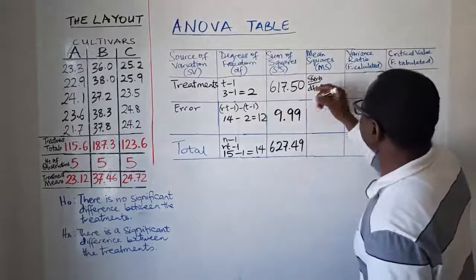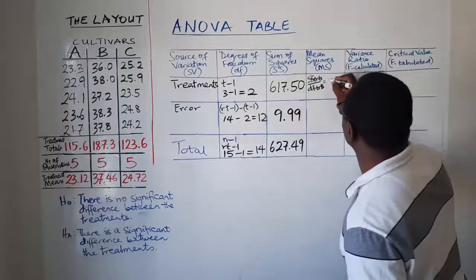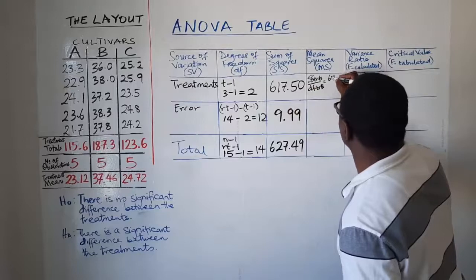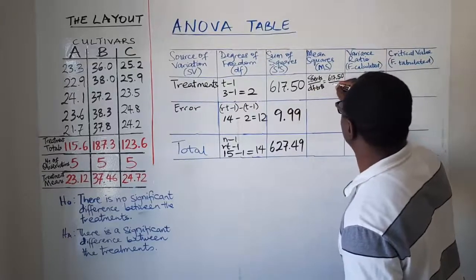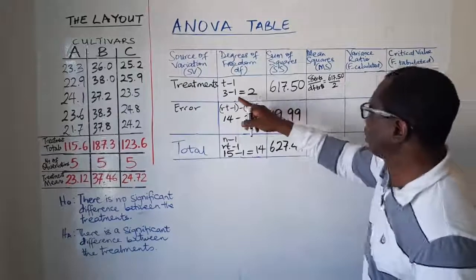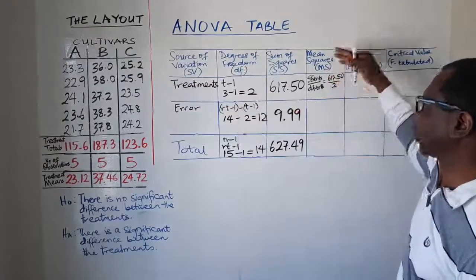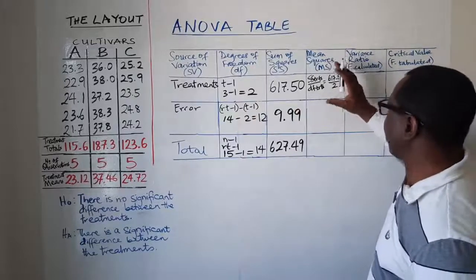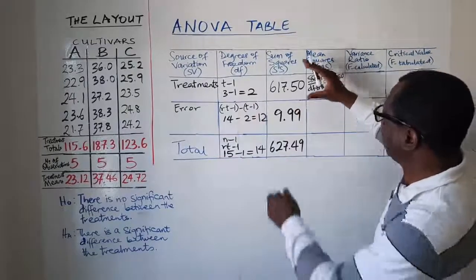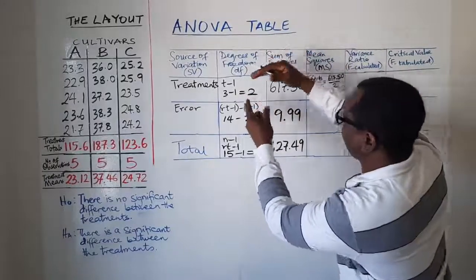So for here it will be SS treatments divided by DF for treatments. So it will be 617.50 divided by 2. So that's how we calculate mean squares in ANOVA table. It's always a standard procedure. Mean squares are SS divided by DF.